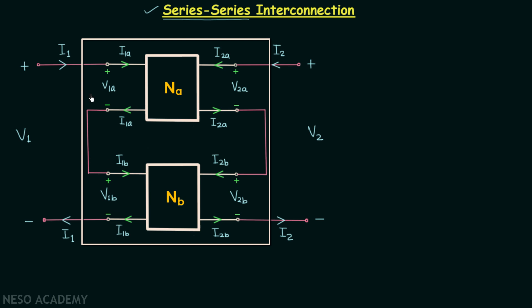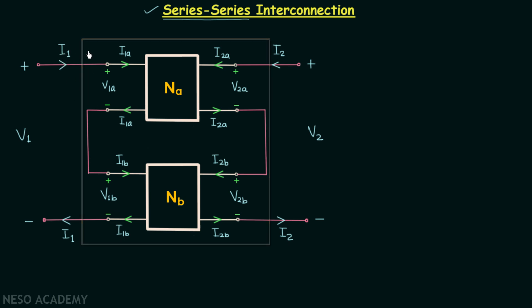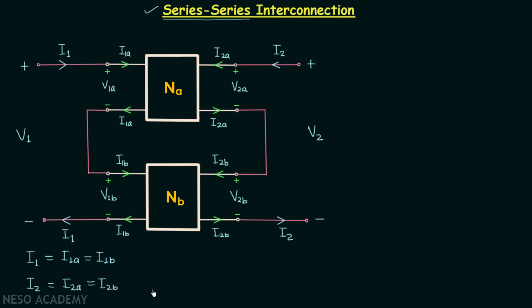We can see that current I1 is equal to I1A, and current I1 is also equal to I1B. Current I2 is equal to I2A, and it is also equal to I2B.